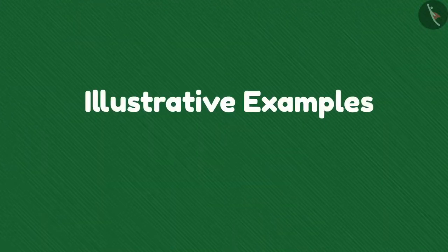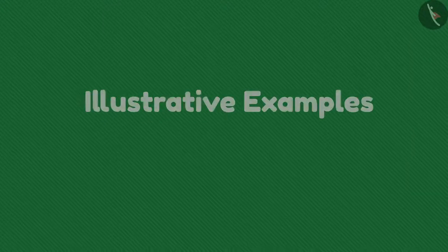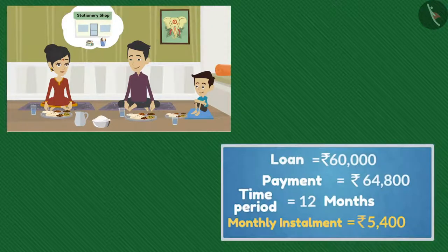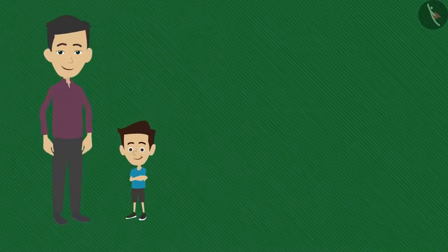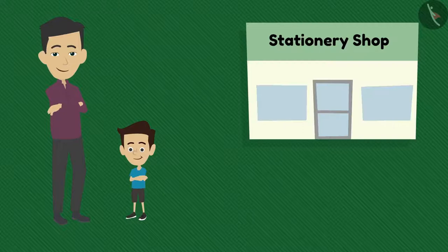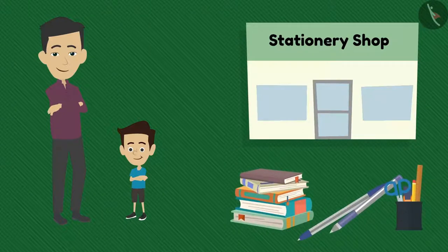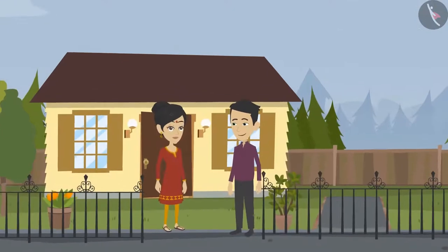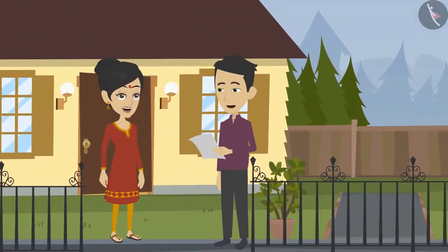Hello friends, welcome to this video. In the previous video we learned how Ramu and his family were thinking about taking a loan from the bank to start a new venture. Today we will see how Ramu and Sham are purchasing things for their shop. Our work has finally started — today I will go to market to buy things for my shop, and I have made a list too.